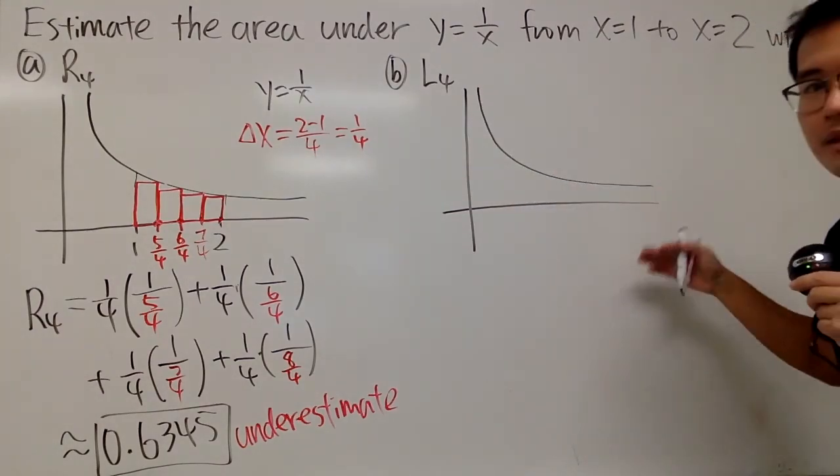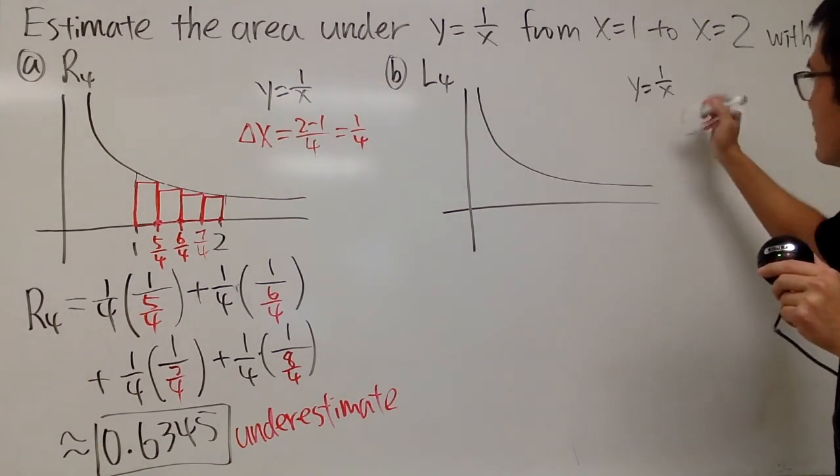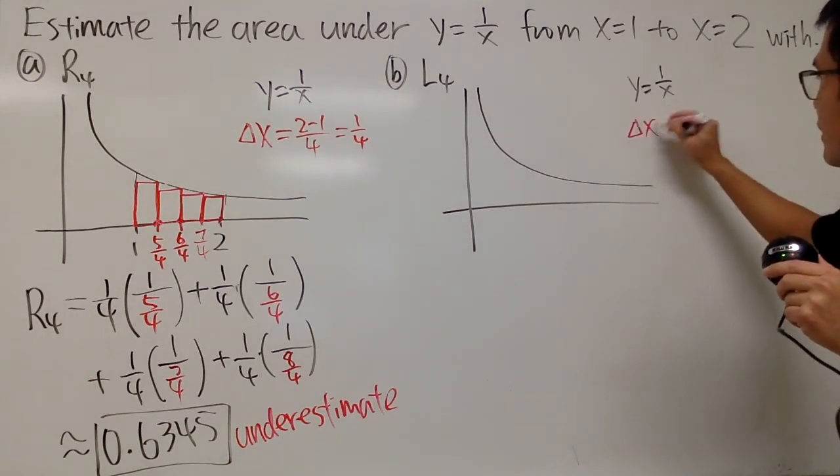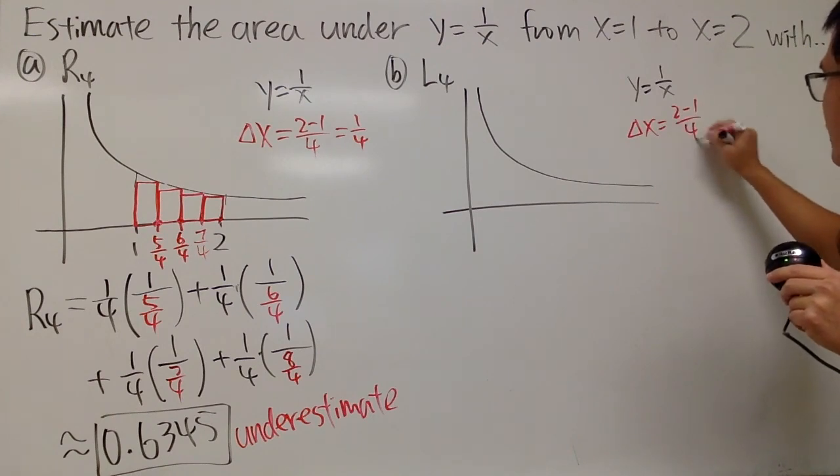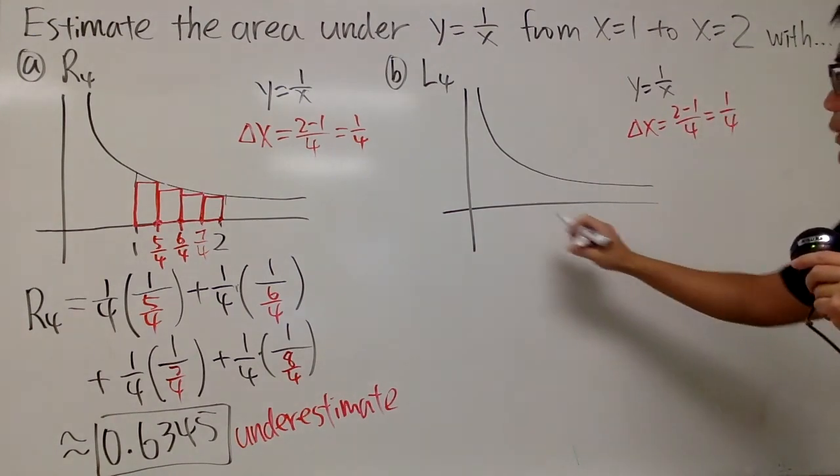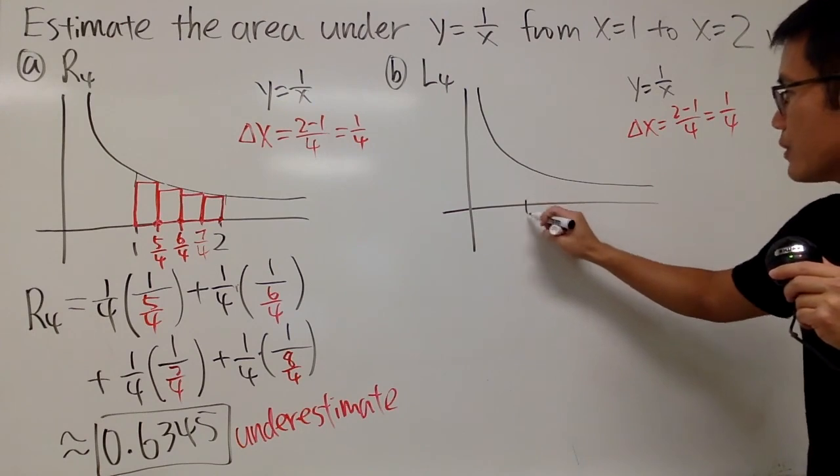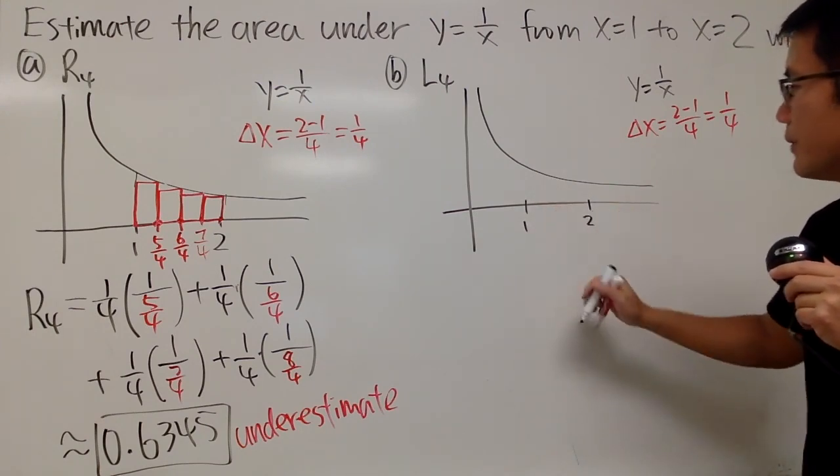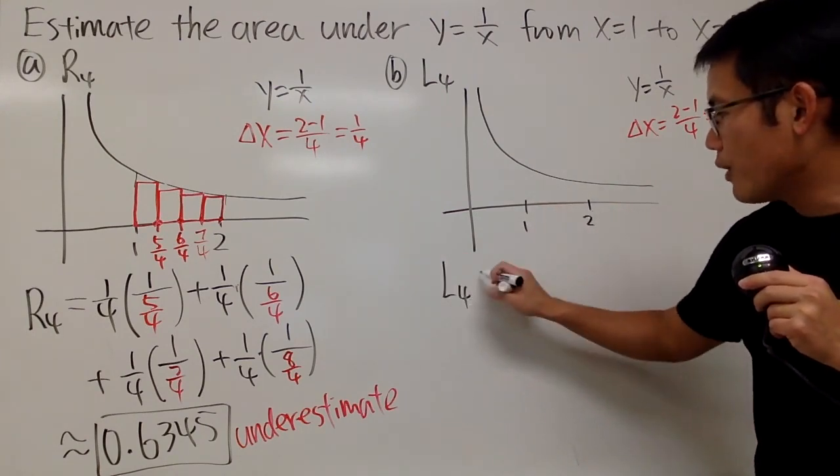And yeah, y equals 1 over x, and then of course, if you would like, go ahead and put on delta x, which is the same thing as the one that we got earlier. And then we are going from 1 to 2, so let's say this is 1, this is 2. All right, L4 in action.